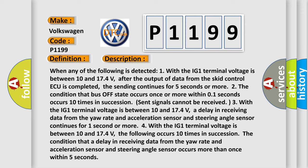Four, with the IG1 terminal voltage is between 10 and 17.4 volts, the following occurs 10 times in succession: the condition that a delay in receiving data from the yaw rate and acceleration sensor and steering angle sensor occurs more than once within five seconds.